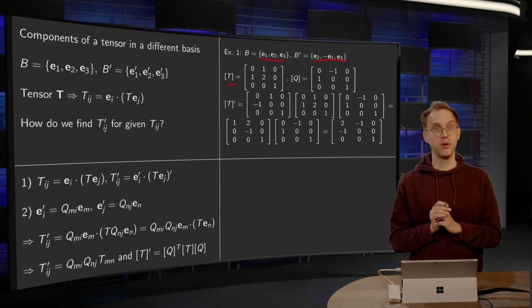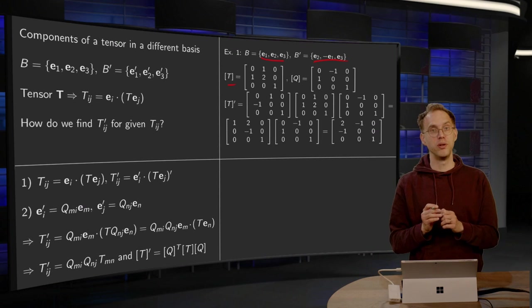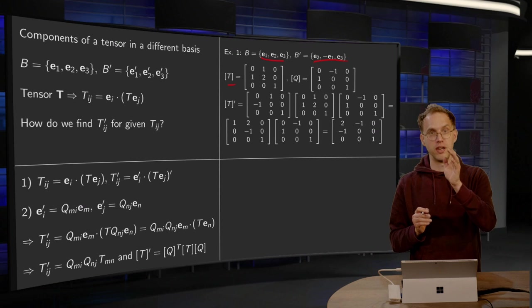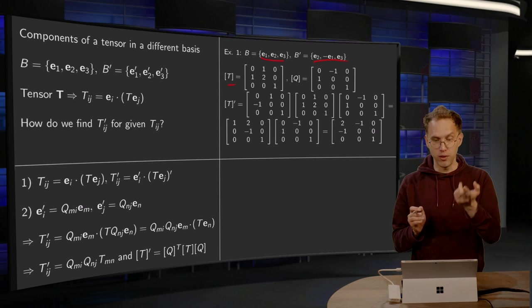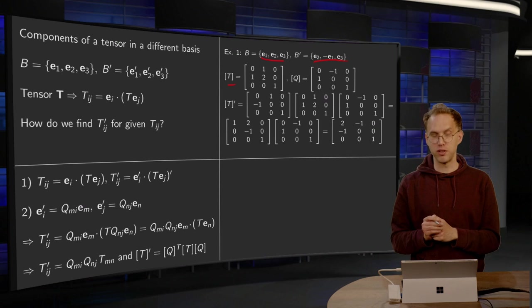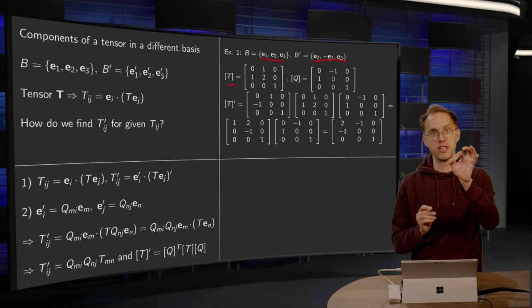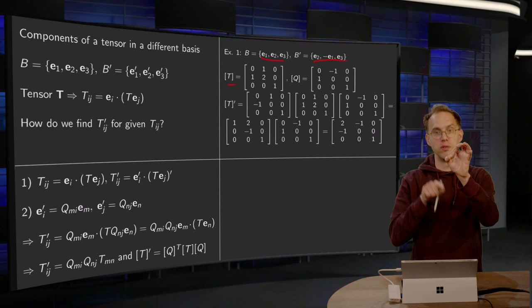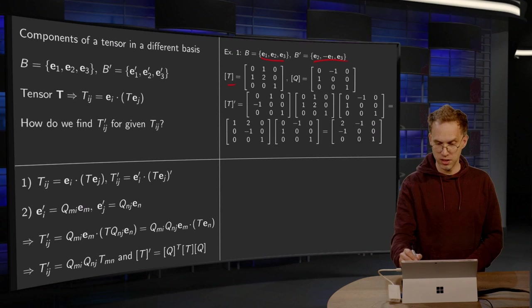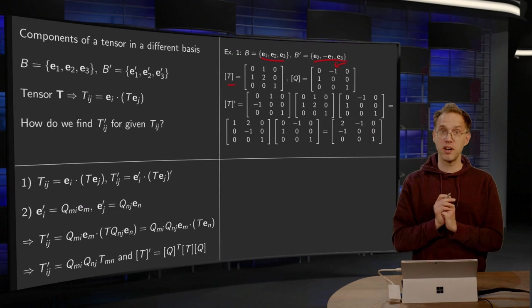Now first of all we have to compute our Q. So the columns of Q are e'_1, e'_2, and e'_3 in the old basis. So for the second column for example, we have e'_2 equals minus e_1, so we get a minus 1·e_1 plus 0 times e_2 plus 0 times e_3. That is this column over there.